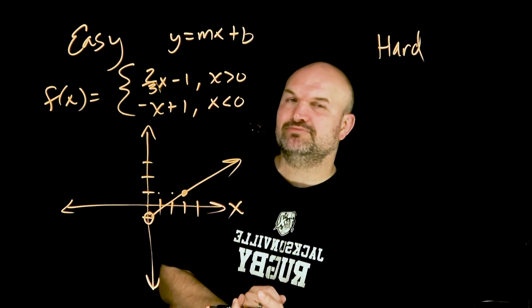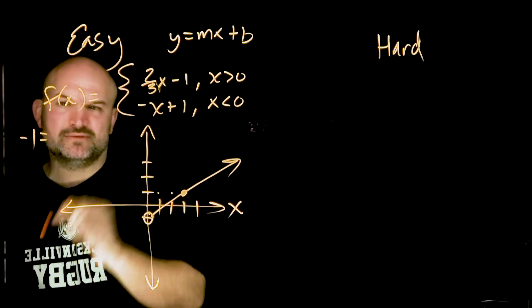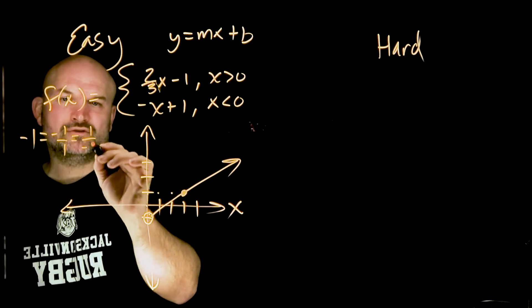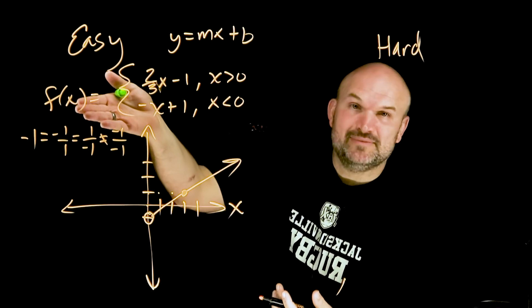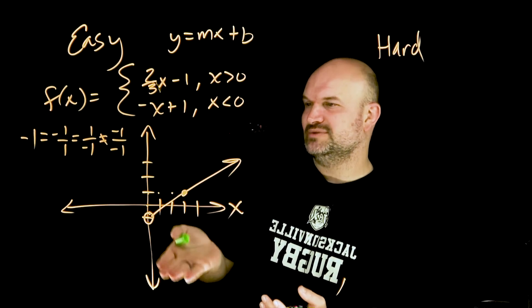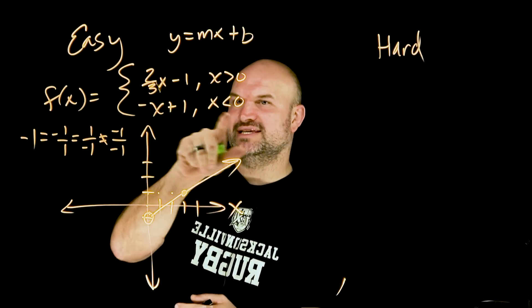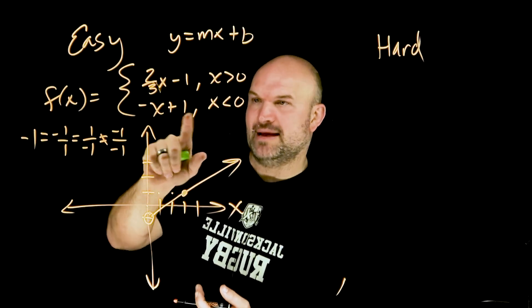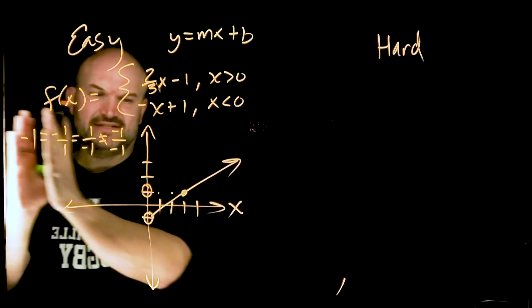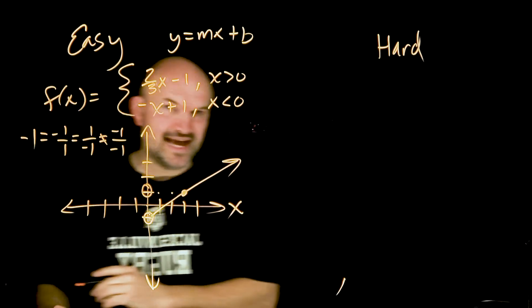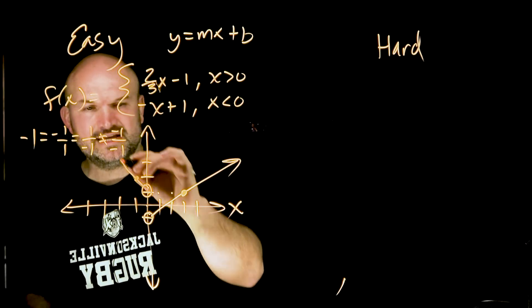The next piece is negative x plus one. Remember, a negative slope can be written as negative one over one, or positive one over negative one — but do not do negative one over negative one, because negative over negative is positive. For this piece, x is less than zero, so I want my run going to the left. The y-intercept is positive one, so I place an open circle there, then go up one and left one. The graph continues to the upper left.